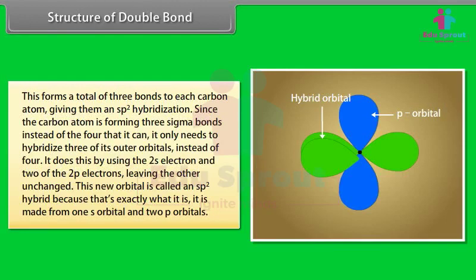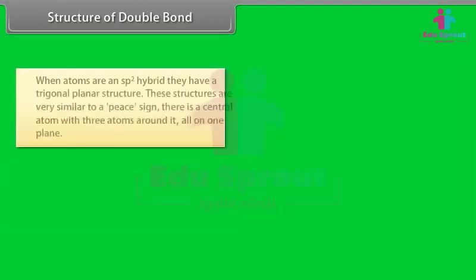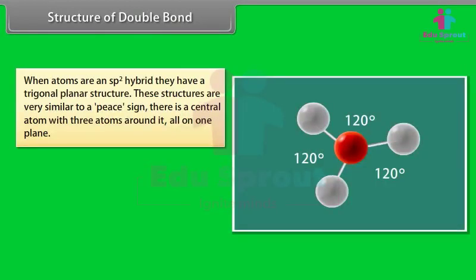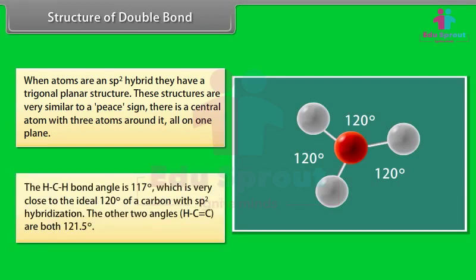The sp2 hybrid is made from one s orbital and two p orbitals. When atoms are sp2 hybridized, they have a trigonal planar structure, similar to a T-shape, with a central atom and three atoms around it all on one plane. Trigonal planar molecules have an ideal bond angle of 120 degrees on each side. The H-C-H bond angle is 117 degrees, which is very close to the ideal 120 degrees of carbon with sp2 hybridization. The other two H-C-C angles are both 121.5 degrees.